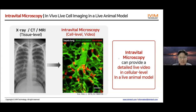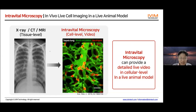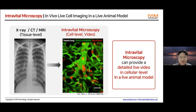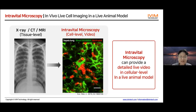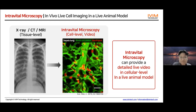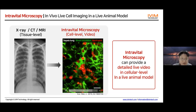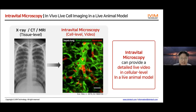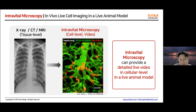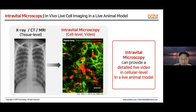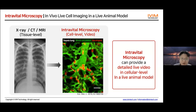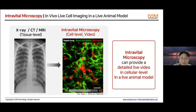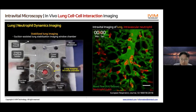This time-lapse video is obtained from the lung of a sepsis mouse model. In green is blood circulation, fluorescently labeled by intravenously injected FITC dextran, and in red are intravascular neutrophils inside the vessel. These neutrophils are labeled by intravenously injecting Ly6G antibody conjugated with a red fluorophore, which circulates through the blood and labels all neutrophils inside the vessel in red.